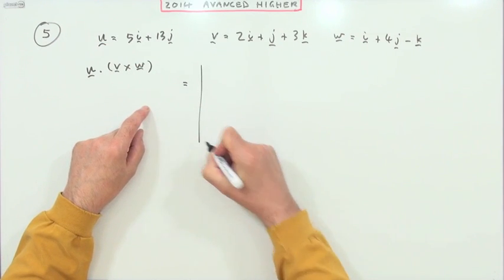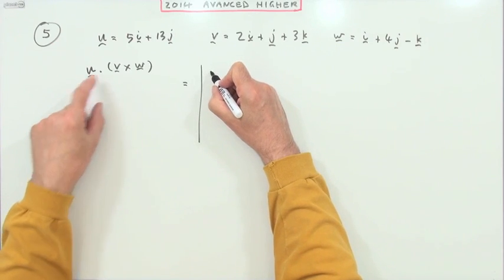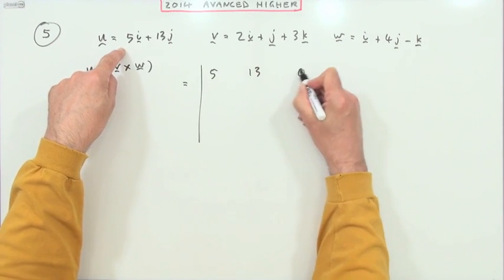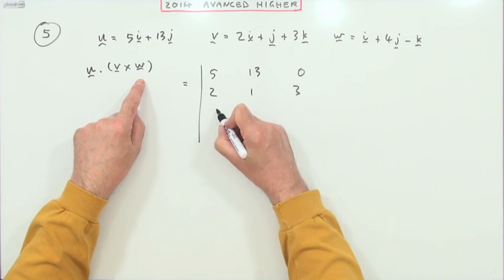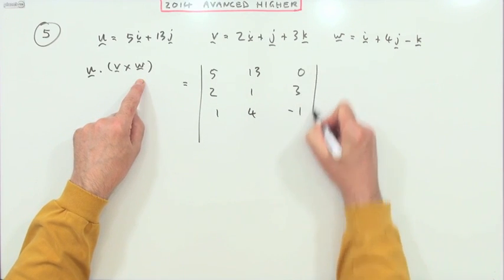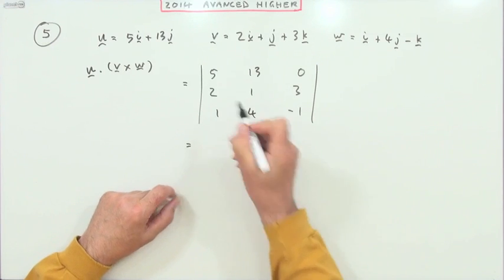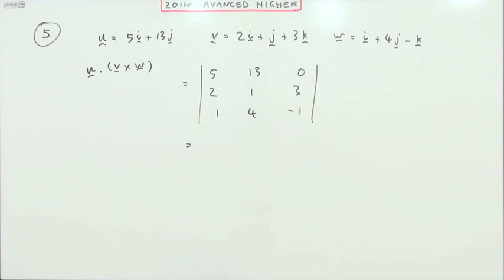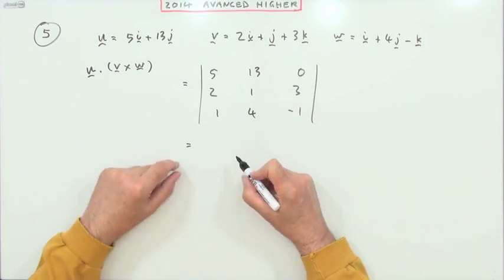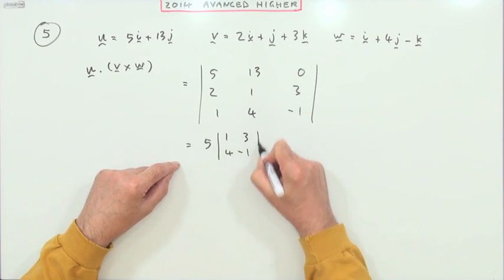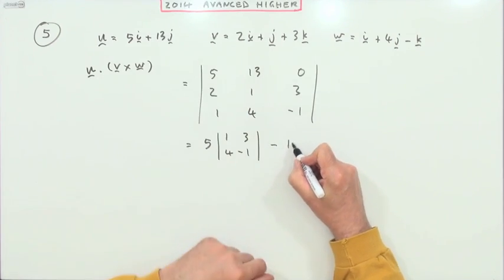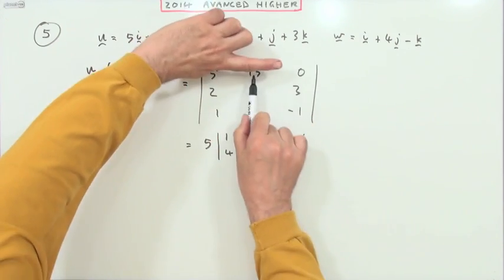So you'd have u which is 5, 13, 0, v which is 2, 1, 3, w which is 1, 4, negative 1, and just evaluate that determinant. So I'll be using the top row: 5 times its minor here which is 1, 3, 4, negative 1, but negative in this position.